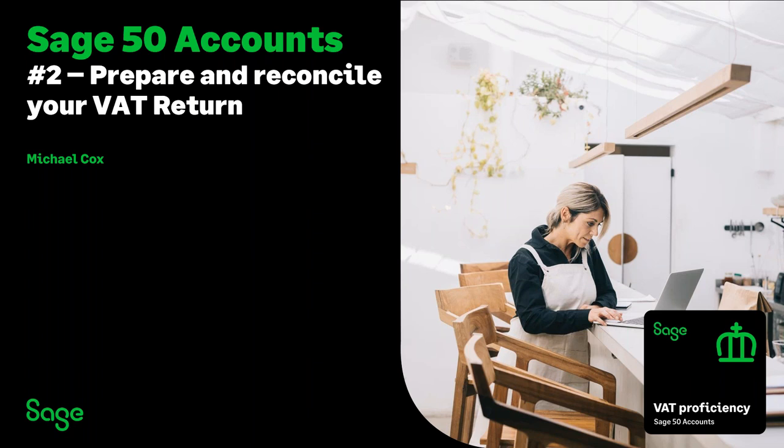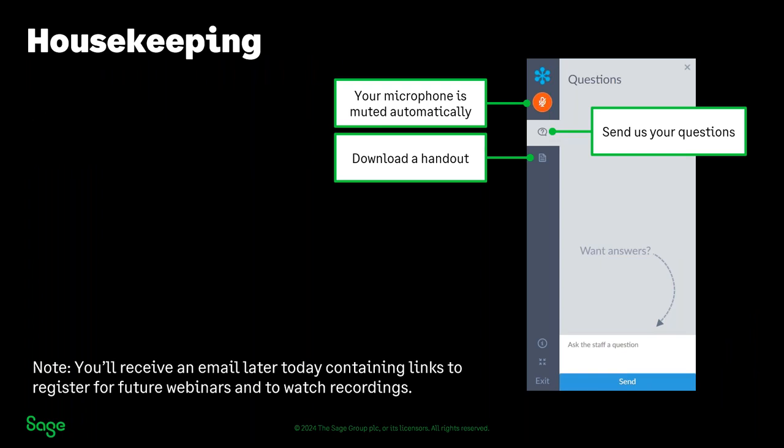Just before we get started, a little bit of housekeeping. It may be your first webinar with us, or maybe you haven't attended one in a while. You don't need a microphone for these sessions — if you've got one it will just be muted automatically. Any questions today, you'll need to pop them into the questions panel. To access that, click the little icon on your toolbar on the right-hand side — the one that looks like a speech button. Click it, it'll expand your panel, and that's where you can submit any questions or comments.